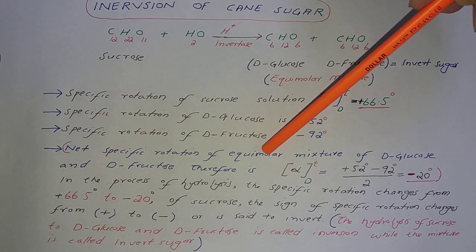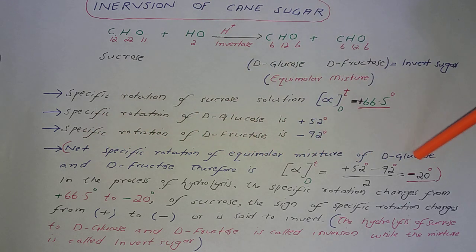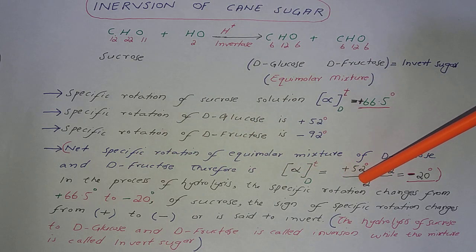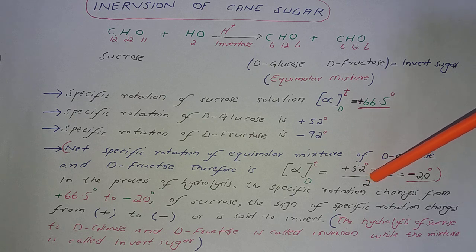The net specific rotation of equimolar mixture of D-glucose and D-fructose therefore will be an average. Plus 52 minus 92 divided by 2 is equal to minus 20 degrees.